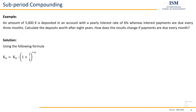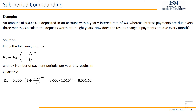Using this formula and getting back to our example — the quarterly case with K0 of 5,000, a yearly interest rate of 6%, t of 4 because it's quarterly, and n of 8 because it's 8 years — we just insert these values and get a new interest factor of 1.015, raised to the power of 32, giving us in the end a value of 8,051.62.